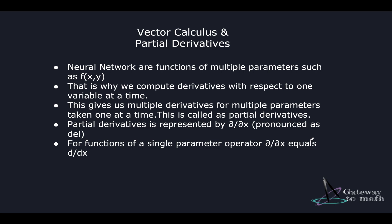Let us now move from scalar derivatives to vector derivatives. Before understanding vector derivatives, we need to understand partial derivatives. Neural networks are functions of multiple parameters such as f(x, y). That is why we compute derivatives with respect to one variable at a time, giving us multiple derivatives for multiple parameters taken one at a time — this is called partial derivatives. Partial derivatives are represented by the del symbol (∂/∂x), and for functions of a single parameter, ∂/∂x equals d/dx.